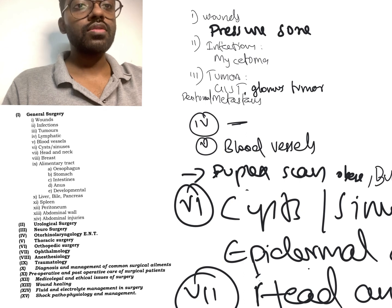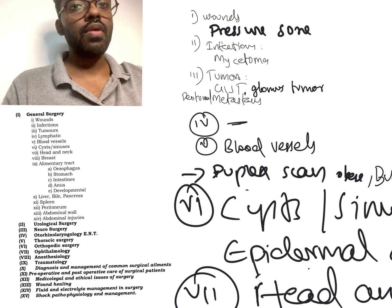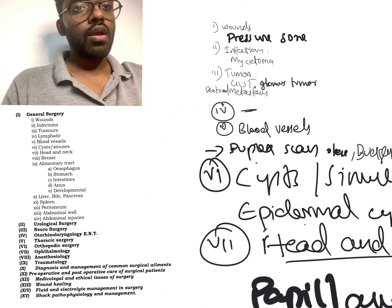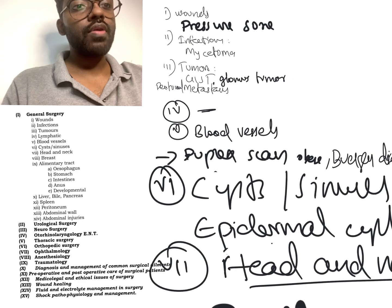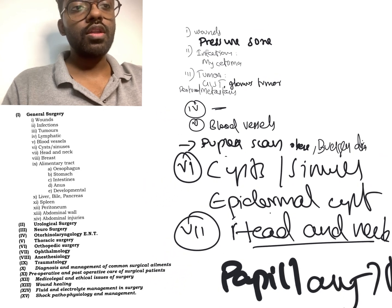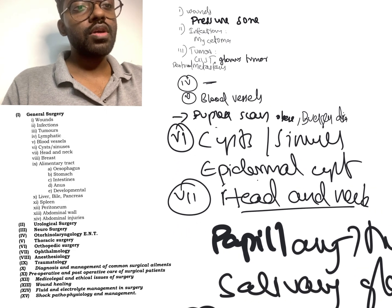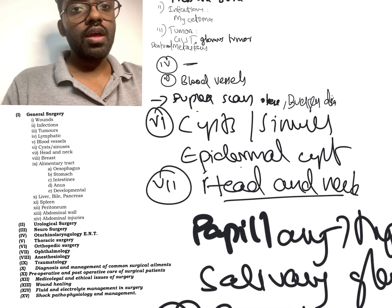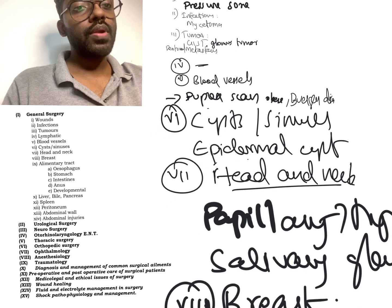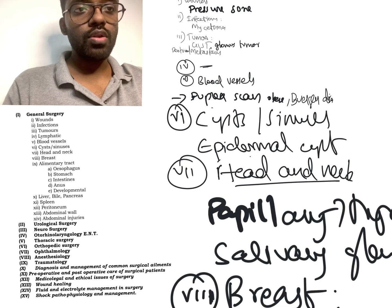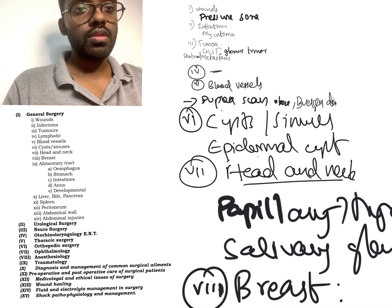From the fourth topic, lymphatics, they haven't asked anything recently, but last year they asked about lymphedema after breast surgery. The fifth topic is blood vessels — they asked about duplex scanning in obesity and also about Buerger's disease. The sixth topic is cyst and sinus, from which they asked about epidermal cyst. Previously they asked about branchial cyst and ranula, so anything can be expected.